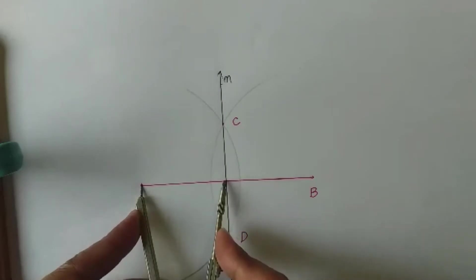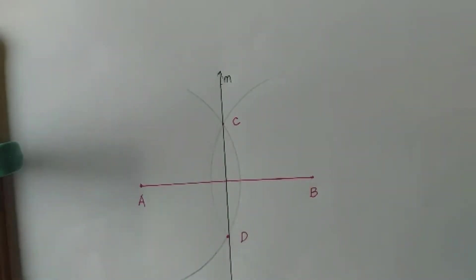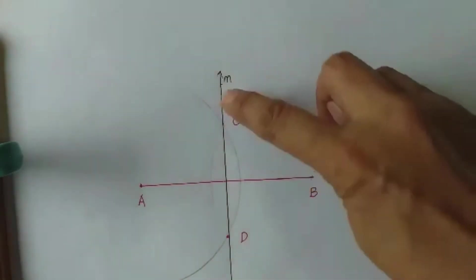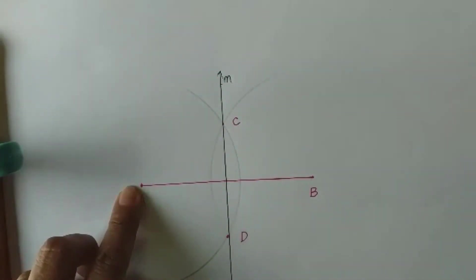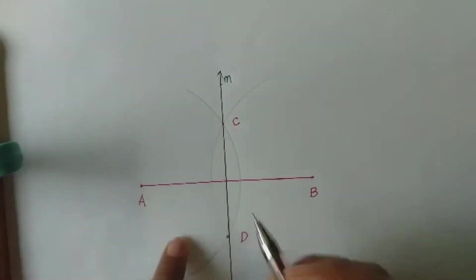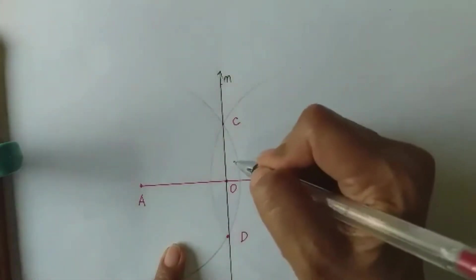Let us measure now the distance from point A to the intersection of line m and segment AB. With the same compass opening, as you can see, we can say now that line m bisects segment AB at point O. So the intersection will be named now point O.